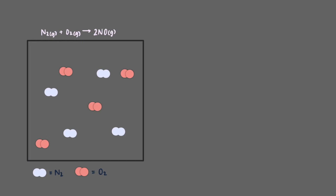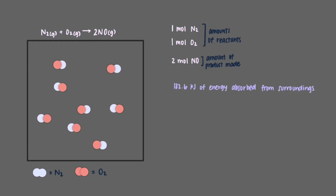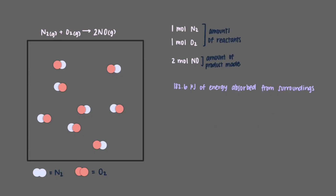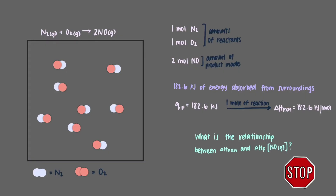Let's consider another container, also filled with nitrogen and oxygen. This time it's filled with 1 mole of nitrogen and 1 mole of oxygen, and the products made are 2 moles of nitric oxide. When the reaction takes place, 182.6 kJ of energy are absorbed from the surroundings. The heat of the reaction Q_P is 182.6 kJ and there is 1 mole of reaction taking place, so the delta H of reaction is 182.6 kJ per mole.